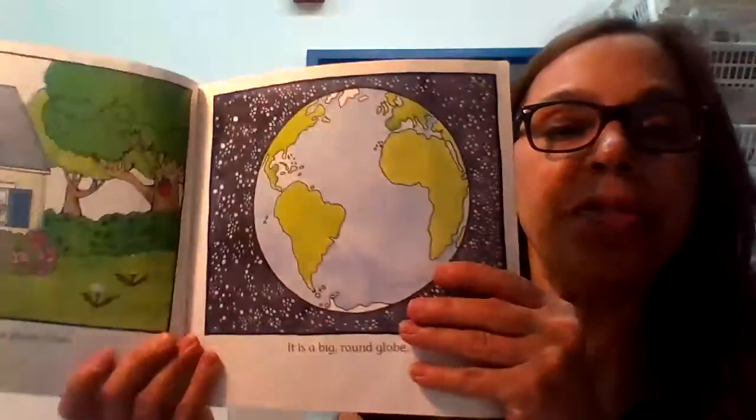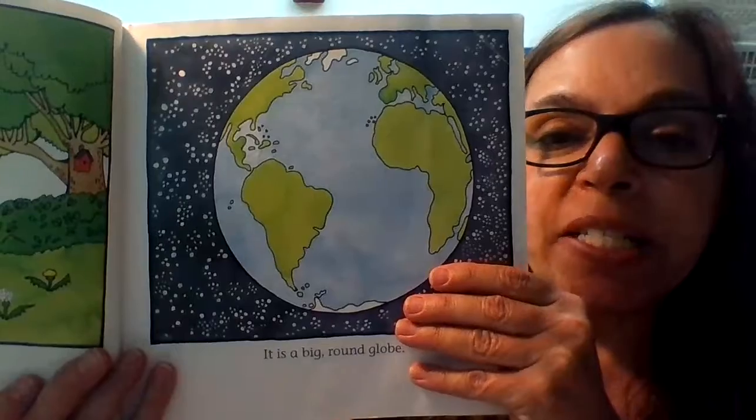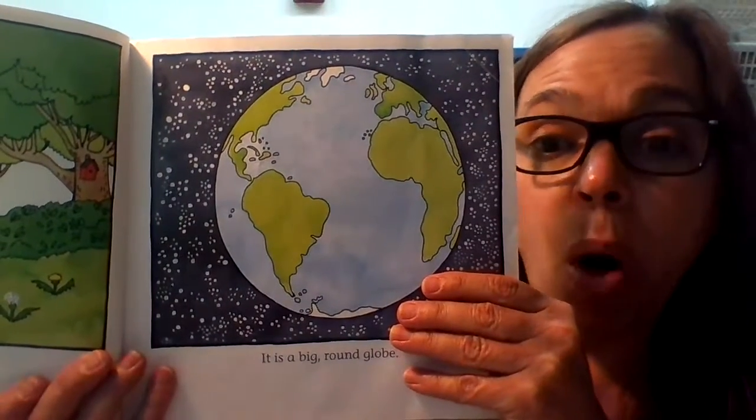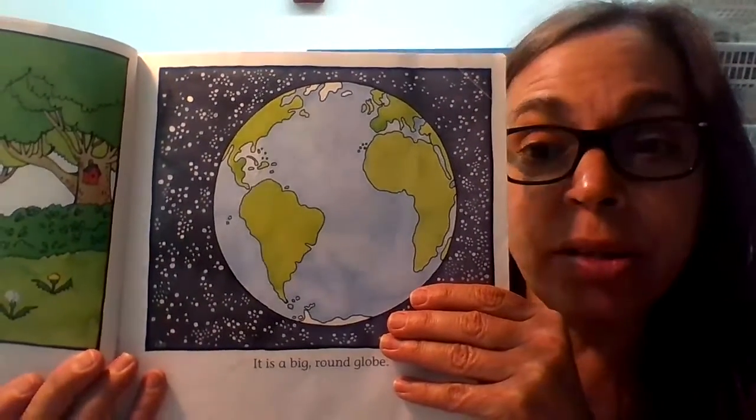In this book we talk about the planet Earth. We live on a planet called Earth. Earth is a round shape. It's actually a sphere. It's like a ball, and it floats around out in the sky and also spins around.